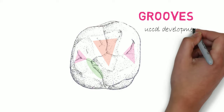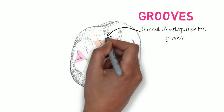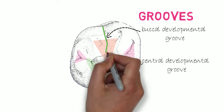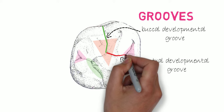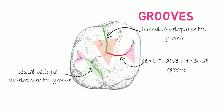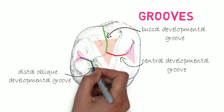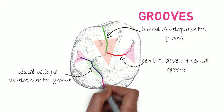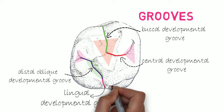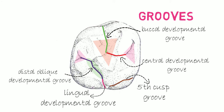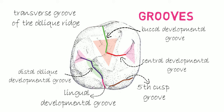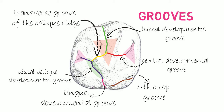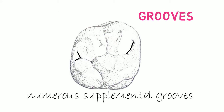Regarding the grooves: a buccal developmental groove from the central pit runs buccally, going between the buccal cusps onto the buccal surface. A central developmental groove from the central pit runs mesially and ends in the mesial triangular fossa. A distal oblique developmental groove originates from the distal triangular fossa, runs through the linear distal fossa, and turns lingually between the lingual cusps, continuing onto the lingual surface as the lingual developmental groove. A groove formed by the cusp of Carabelli is known as the fifth cusp groove. An additional transverse groove of the oblique ridge is seen in some teeth, where a groove runs across the oblique ridge connecting the central fossa and the distal fossa. Numerous supplemental grooves are also seen on the occlusal surface.